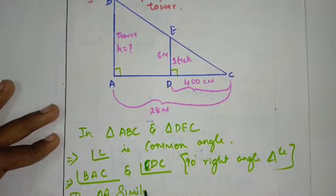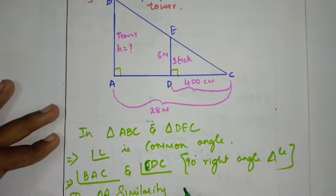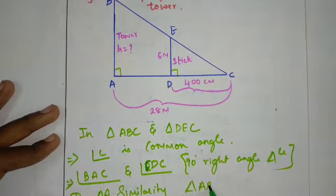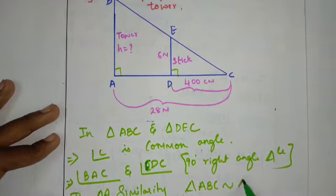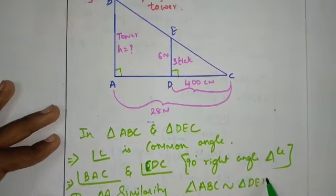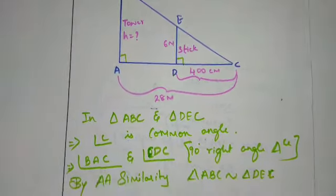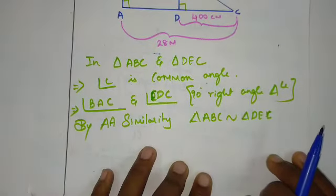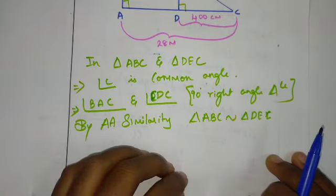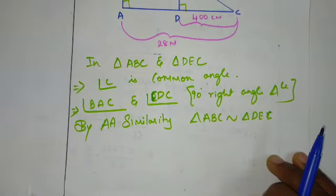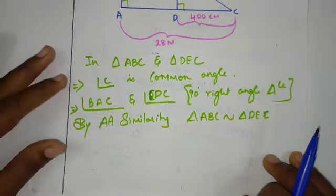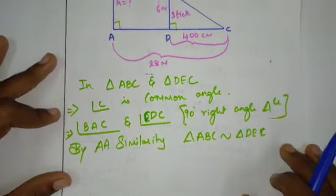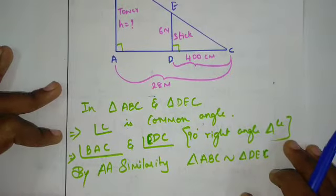So using these two triangles, ABC is similar to DEC, which we can prove. Once they are similar, their corresponding sides will be proportional.